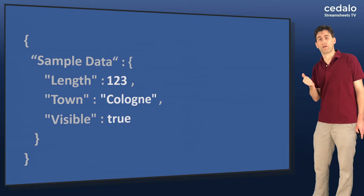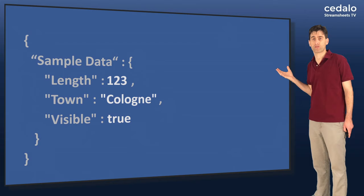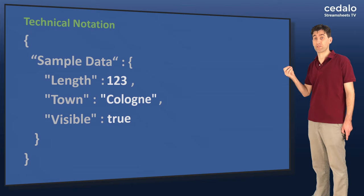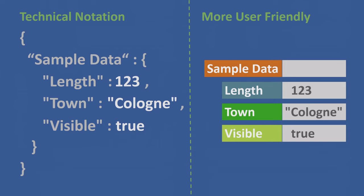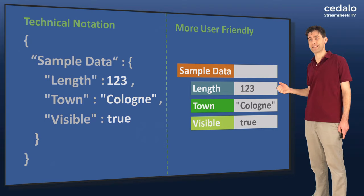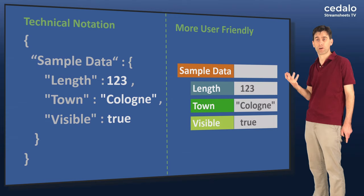Now there's a lot of syntax there which is strictly necessary to be valid JSON, but it's kind of technical. We don't really need to know that in order to understand our data structure. So is there a way that we can make that more user friendly? We've tried to do that here by taking our key values and color coding them according to the different data types that they represent. We can also see that we have indented the length, town, and visible objects by a small amount to indicate that they are children objects of the sample data key.